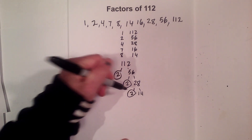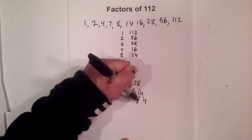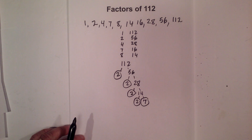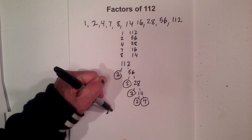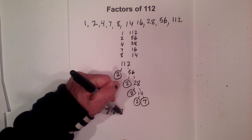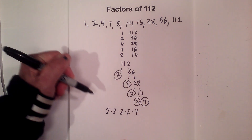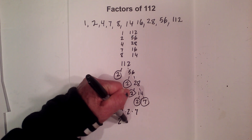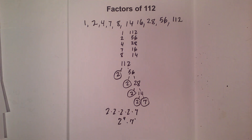2 times 14 — again circle the 2 — and then 2 times 7. Now I'm down to prime numbers. So the prime factors of 112 are 2 times 2 times 2 times 2 times 7, or you can write this as 2 to the 4th times 7 to the 1st.